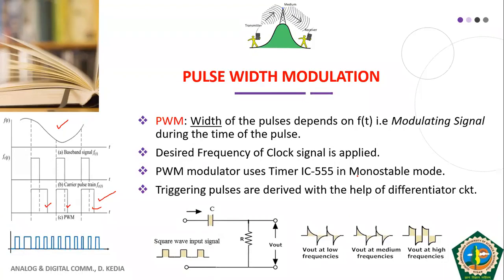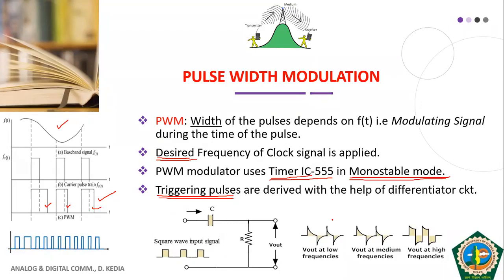The clock pulses or train of pulses applied to the PWM modulator must have a frequency decided by the sampling frequency. The PWM modulator uses timer IC 555 operating in monostable mode. Negative triggering pulses are required by the 555 timer IC, generated from square pulses using a differentiator, in order to generate PWM.